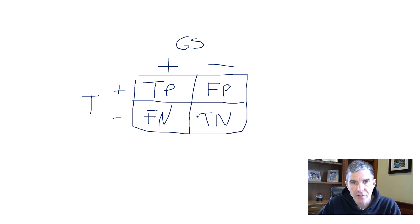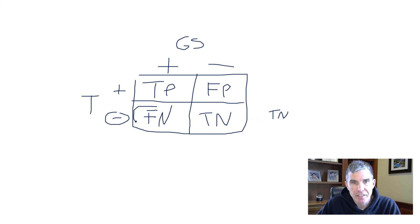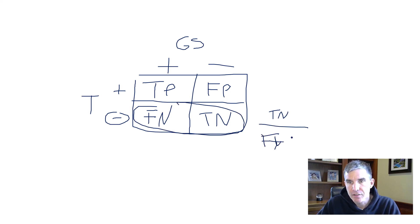The negative predictive value is simply saying: of all the people who test negative, what percentage of them are true negatives? So it's going to be the true negatives divided by everything in the negative row — all the people who test negative — which is the false negatives plus the true negatives. Sorry for my sloppy handwriting here.